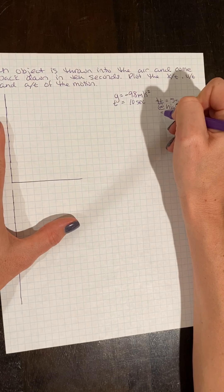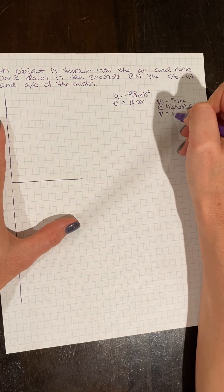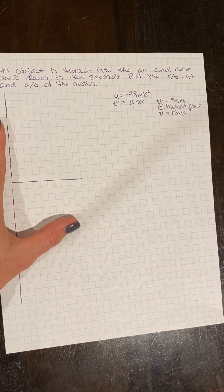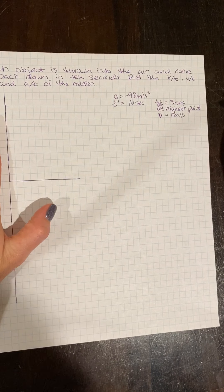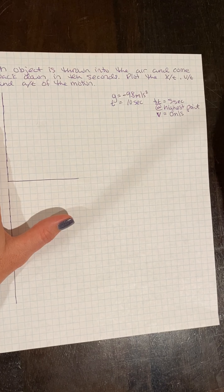I know at my highest point, my velocity there is equal to zero meters per second. So we have some parameters that we can use to help us solve the rest of our variables.